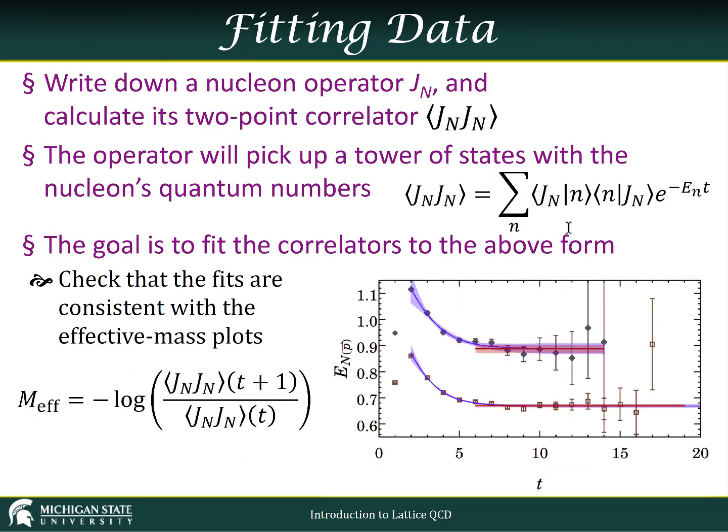Once we have our results in hand, we'd like to check whether or not they make any sense. One easy way to check the energies of the states in our two-point correlator is to use something called the effective mass. Take some correlator at time t plus one, we divide it by the correlator at some time t, and then we take the logarithm.